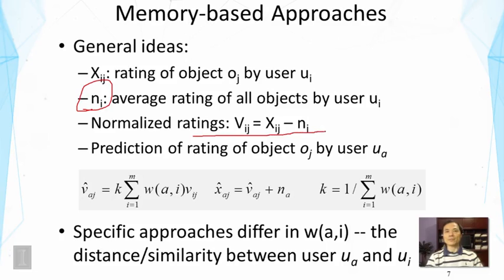How do you do normalization? We subtract the average rating from all the ratings to normalize them so that ratings from different users would be comparable. Some users might be more generous and give high ratings, while others might be more critical, so their ratings cannot be directly compared or aggregated without normalization.